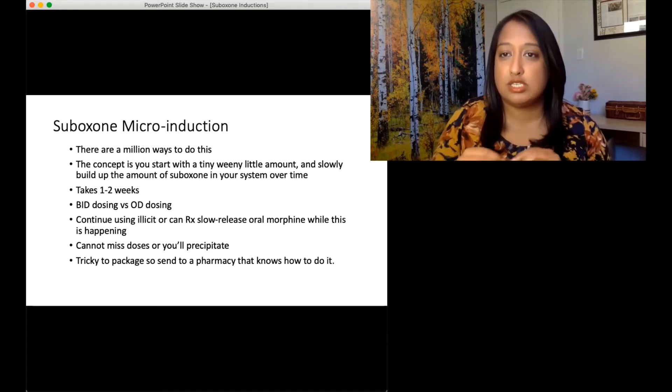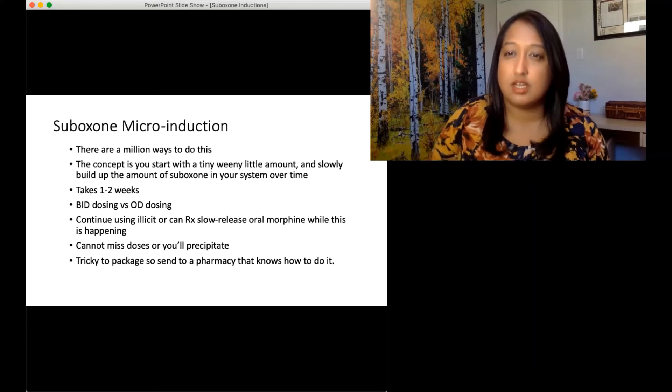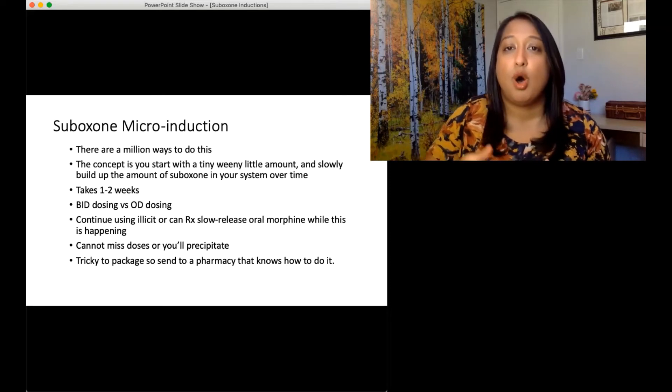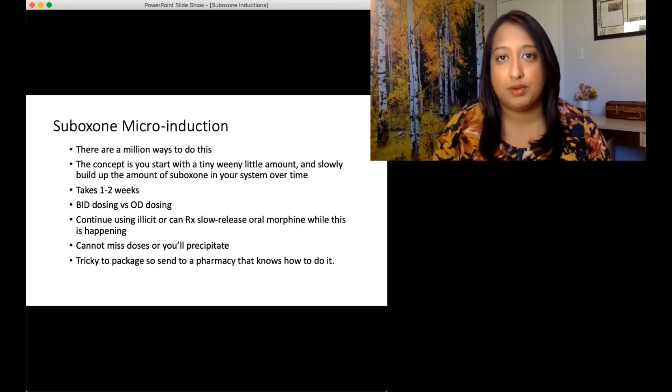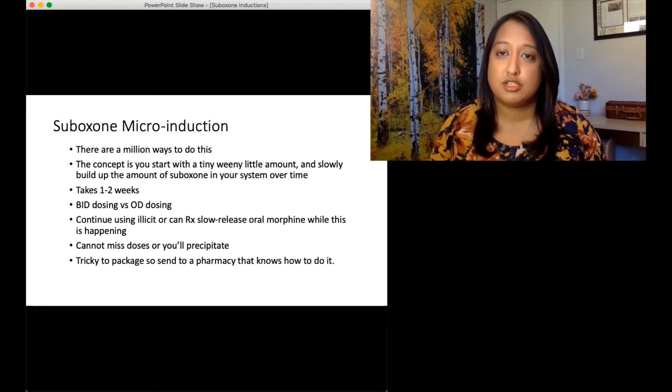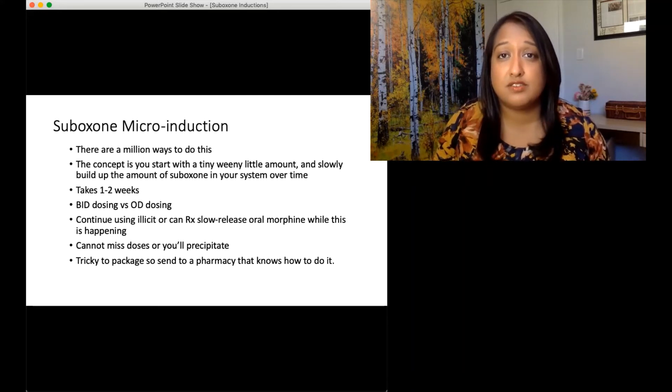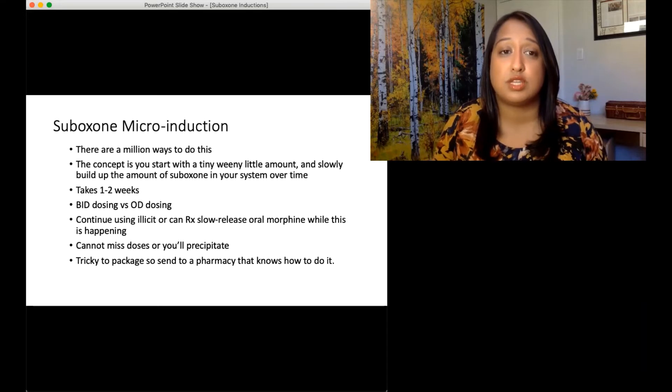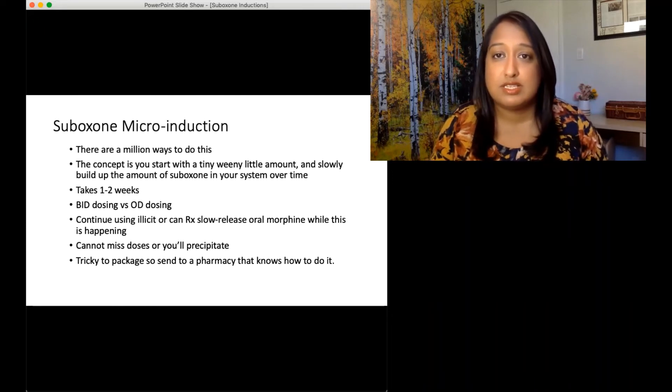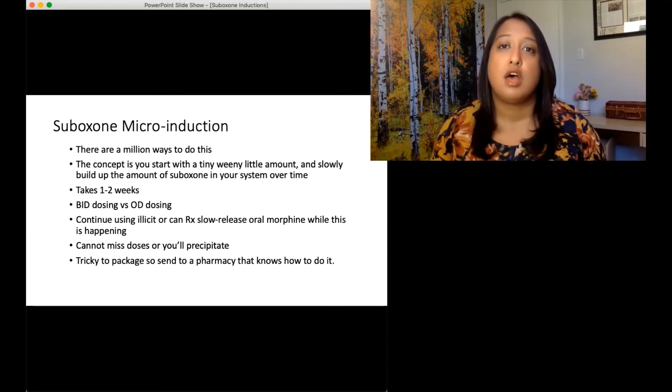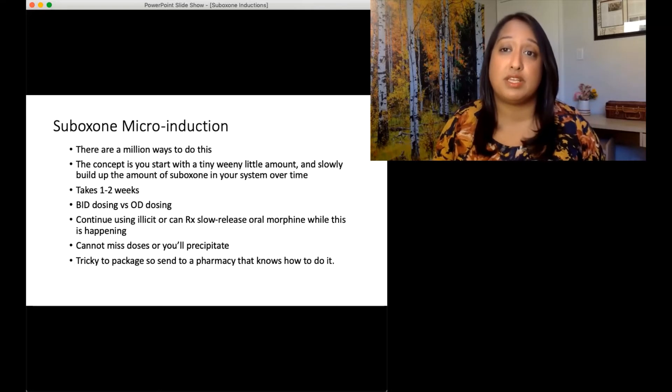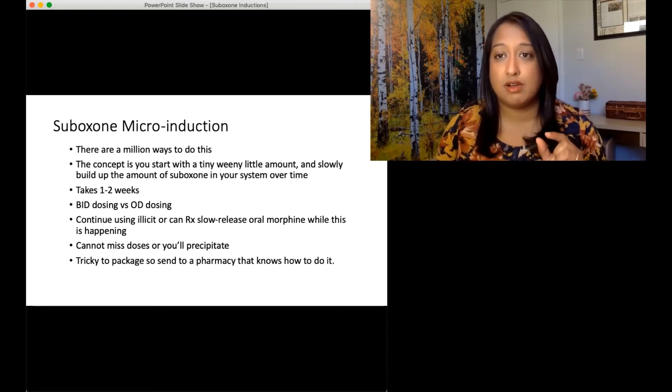When that happens, you just take a little dose one day and a little dose the next day and a slightly bigger dose the day after that. And you slowly work that Suboxone into the system, all the while concurrently being on other opioids. This helps the patient to avoid a withdrawal phase. The downside is it takes a long time, it can take seven to 14 days to get on to a good dose of Suboxone. So you can do once daily dosing or twice daily dosing. There's lots of examples of micro induction schedules that you can follow. And there's a lot of different ways to do this.